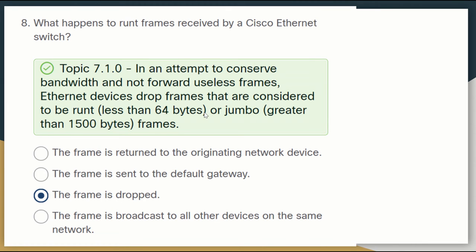Question eight: what happens to runt frames received by a Cisco Ethernet switch? To conserve bandwidth and not forward useless frames, Ethernet devices drop frames considered to be runts — less than 64 bytes — or jumbo frames greater than 1500 bytes. So a runt frame will be dropped.